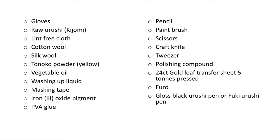You'll also need furo oil that we made in Lesson 2, pencil, paintbrush, scissors, craft knife, tweezer, polishing compound, 24 karat gold leaf transfer sheet 5 tons pressed. Genuine gold leaf is surprisingly cheap, around 1 to 2 pounds each. It will not break the bank. And the gloss black urushi pen we made in tutorial 4.